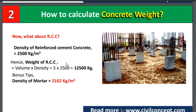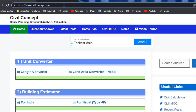In this way we can calculate the weight of both plain cement concrete and reinforced cement concrete. As a bonus tip: the density of mortar is 2162 kg per cubic meter, and in a similar way we can calculate the total weight of mortar required for a structure.